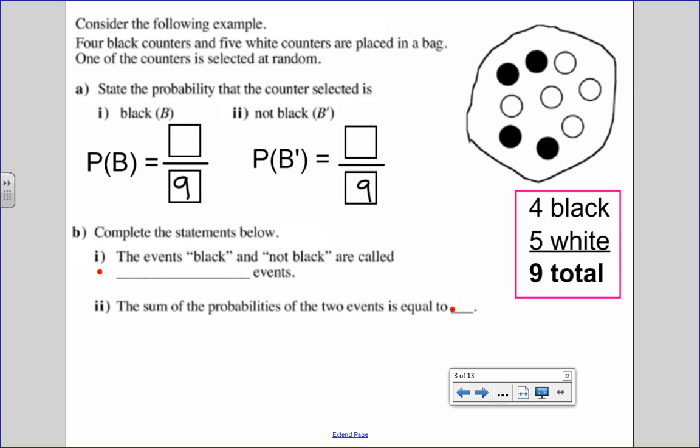So remember the number in the sample space will always be your denominator. So if I look at the black counters, there are four of them. And then if I look at the counters that are not black, in other words, the white counters, there are five. Now if we look at these probabilities, either a counter is black or it's not black. This we learned yesterday was called a complementary event. And when I add complementary events together, the individual probabilities will always add up to one, which is certainty. 100% of the counters will either be black or not black.